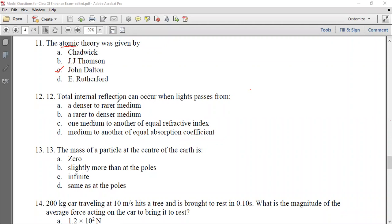Let's see the other question. Total internal reflection can occur when light passes from. Total internal reflection, when you want to observe, light passes from denser to rarer medium. One medium to another medium of equal refractive index. Denser medium to rarer medium, then total internal reflection.